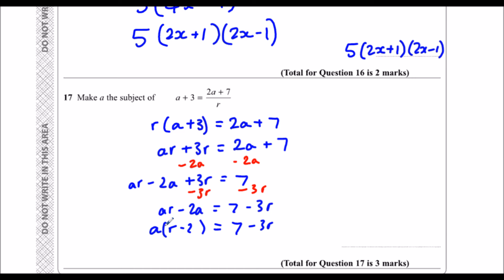And then this means a times (r-2). To get rid of a times (r-2), I do the inverse of that - the opposite - which is dividing by (r-2). So I divide both sides by (r-2).